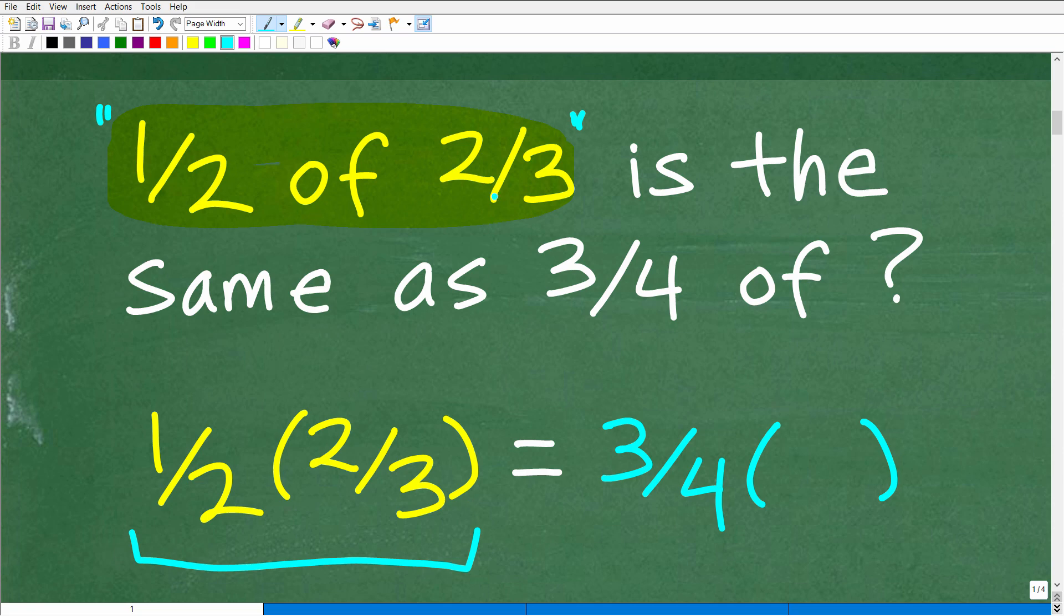So one half of two thirds, now in mathematics when you see the word is, that's always the equal sign. So we'll build a nice equation here. One half of two thirds is the same as what? Well, it's the same as three fourths of some number. So that would be three fourths of, again, we're going to be multiplying by some number.